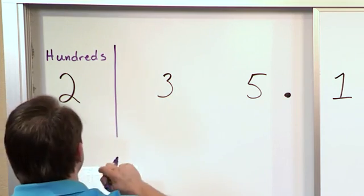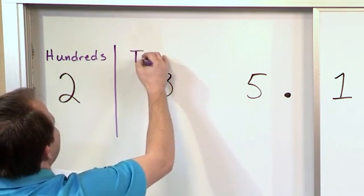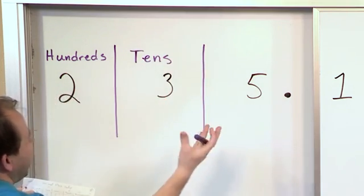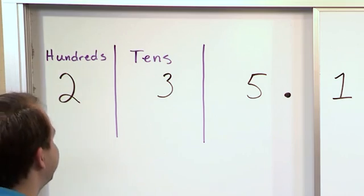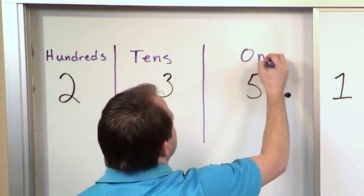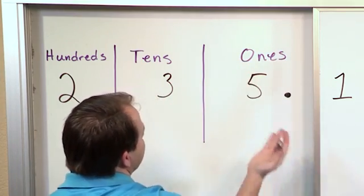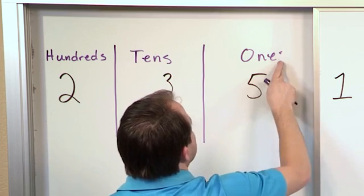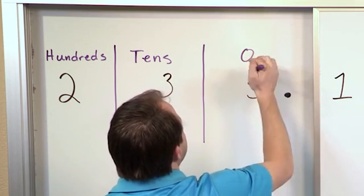And then over here, the three, we already said this is called the tens place. So what we have here is every number here is worth 10, and since we have three, that means that's worth 30. And this digit here is called the ones place. But since we have five of them, this is really worth five. So all of this stuff is stuff that we have learned many times in the past.